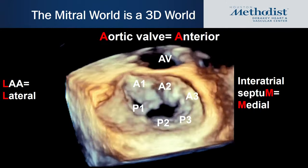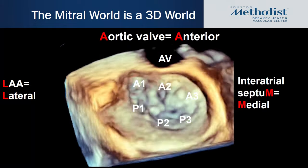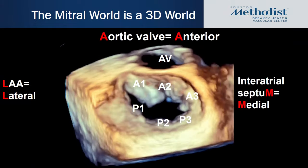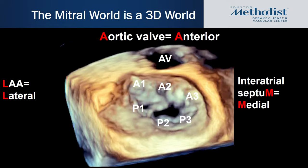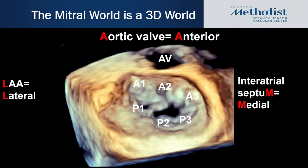It's important to remember that the mitral valve world is a 3D world, so when doing a transesophageal evaluation it's important to get an en-face surgical view showing the different components of the valve to help localize the pathology. In the 3D view, the anterior aspect is bordered by the aortic valve, the anterior atrial septum forms the medial aspect, and the left atrial appendage forms the lateral aspect. The scallops closest to the septum are A3 and P3, while those closest to the appendage are A1 and P1.